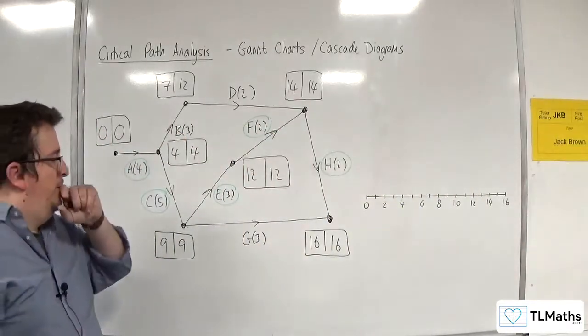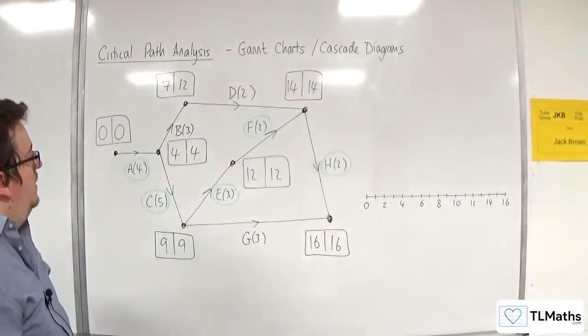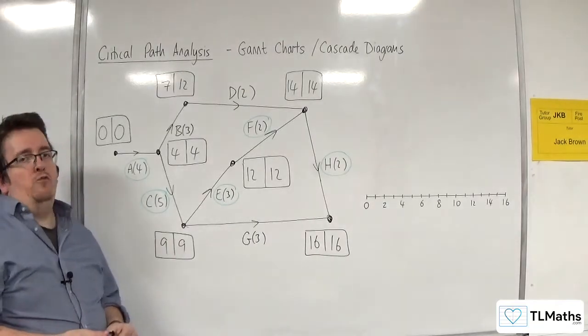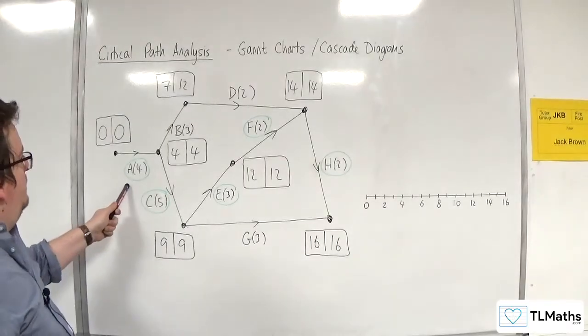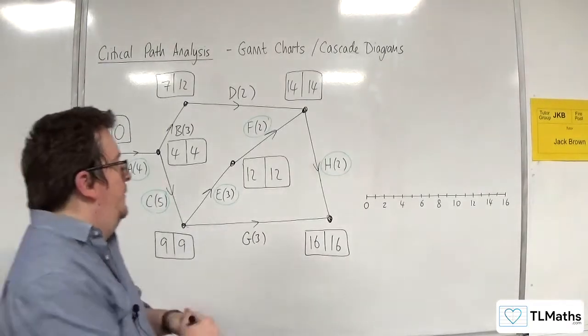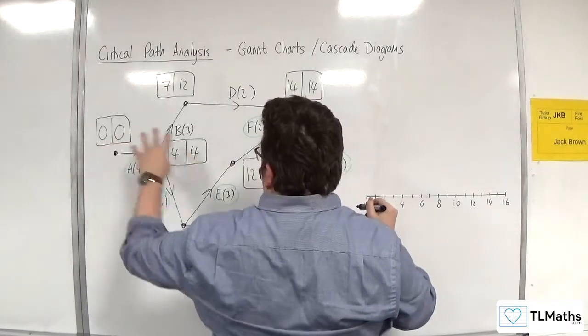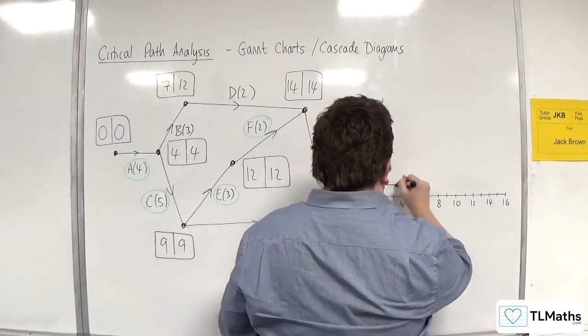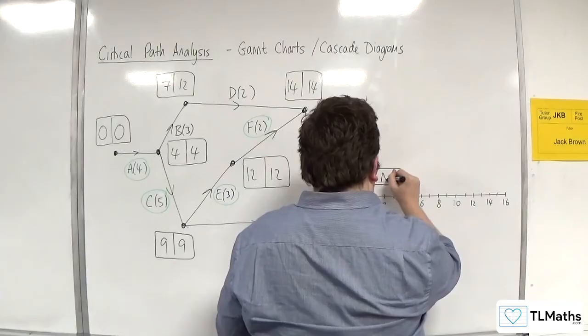Right, so we've got time along the horizontal axis. Each of your activities is going to be represented by a rectangle. Activity A lasts 4 hours, so it starts at 0 and goes on until 4. So it's going to look like that. Here is A.